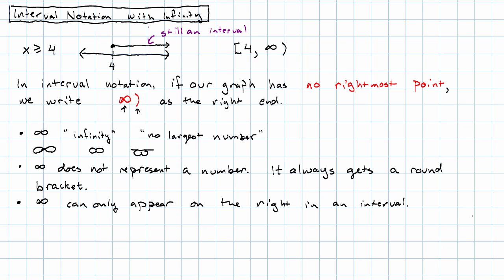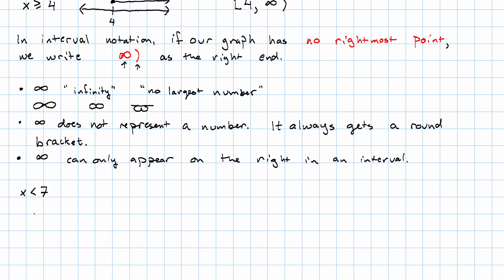What if there's no leftmost point? What if we have something like x is less than 7? So, the graph will look something like this. If there's no leftmost point, then we write negative infinity as the left end.